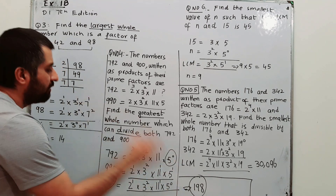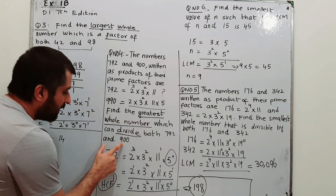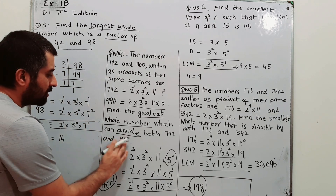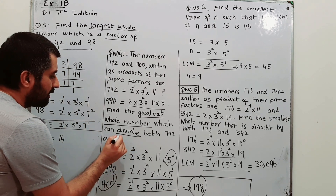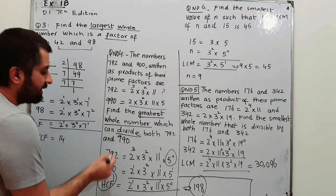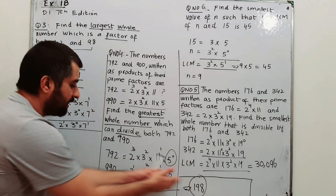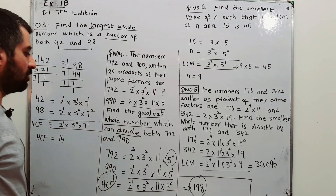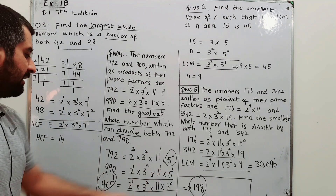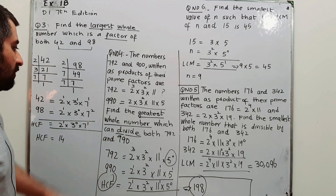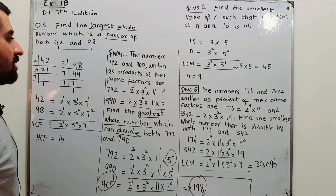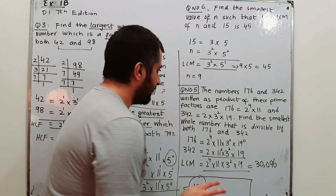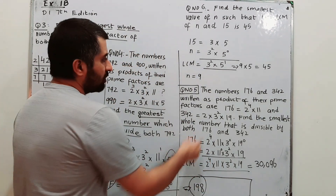So 198 is a number which can divide both 990 and 792 — it is a factor of both of them. Question number 5: the numbers 176 and 342 are written as a product of their prime factors in index notation.